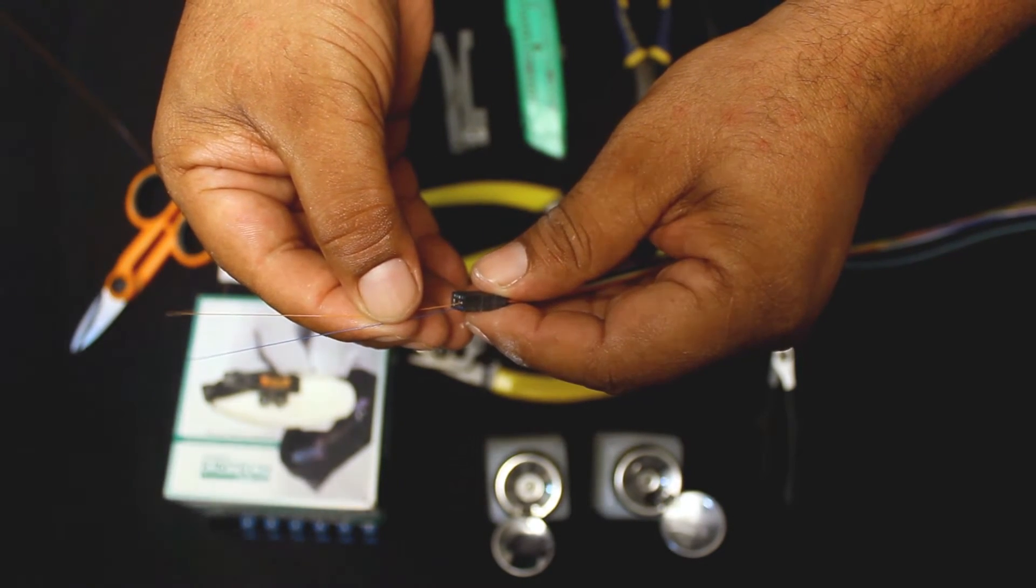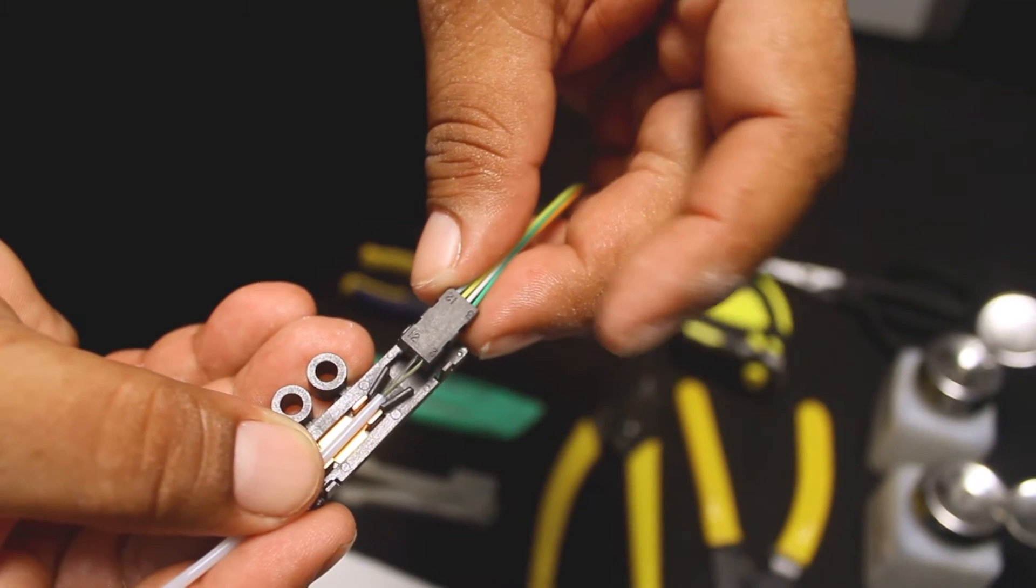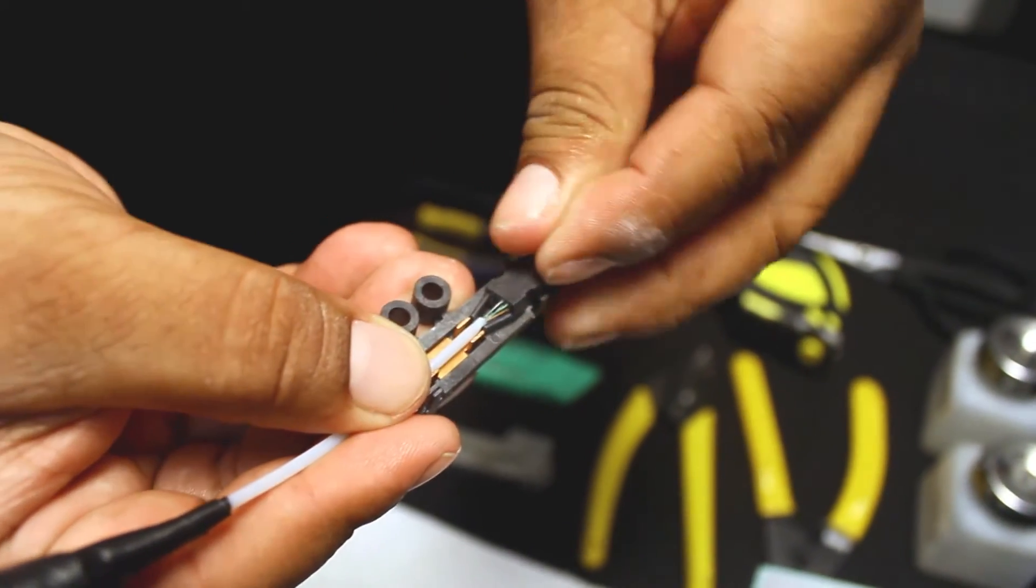Once it's done, softly push the entire group of fibers into the tubes. If you feel resistance in one fiber, you'll have to pull back the group and push again until they are completely inserted.